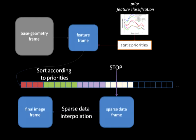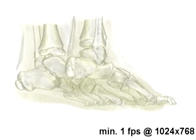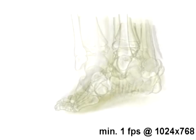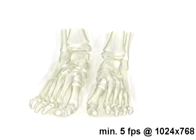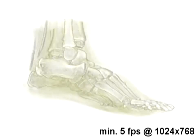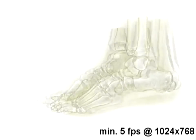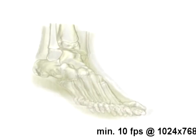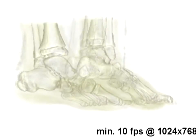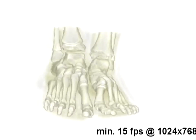The following example shows a volumetric material rendered with increasing guaranteed frame rates. Notice that despite the reduction in quality with growing frame rate, the overall shape as well as details of the object stay recognizable.